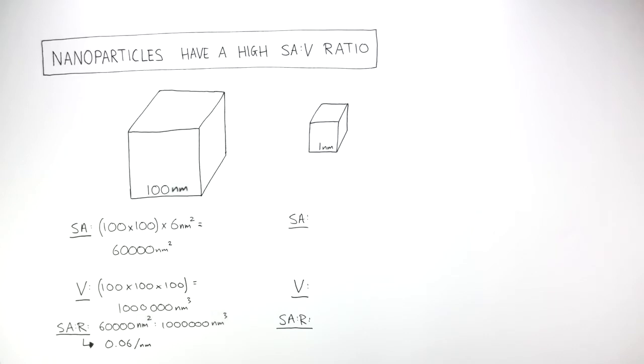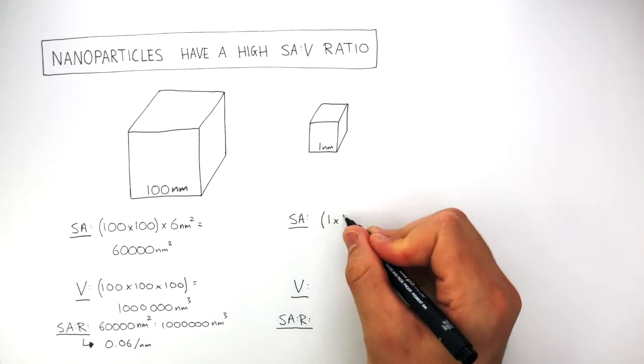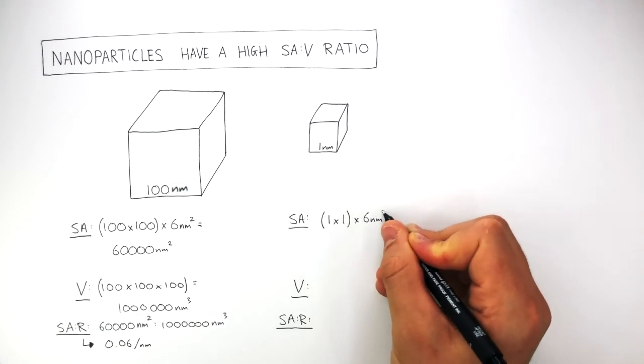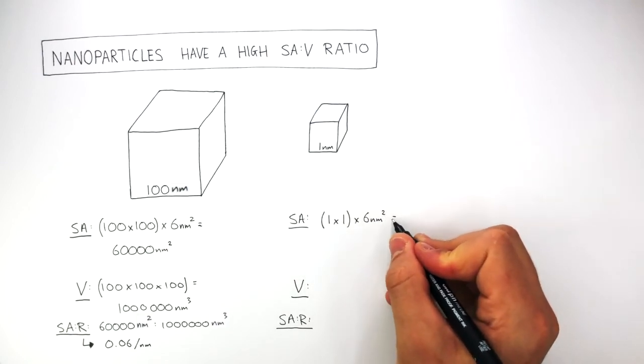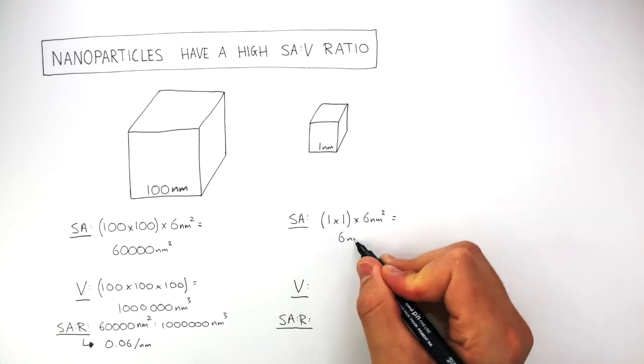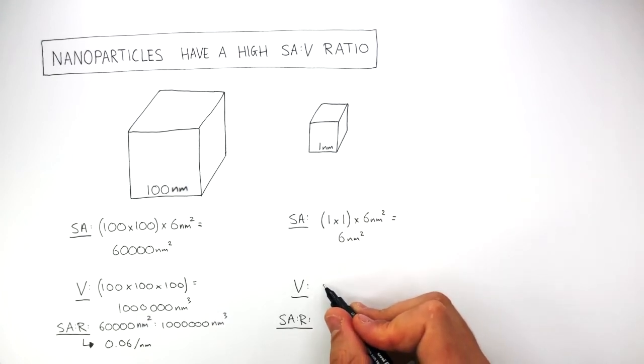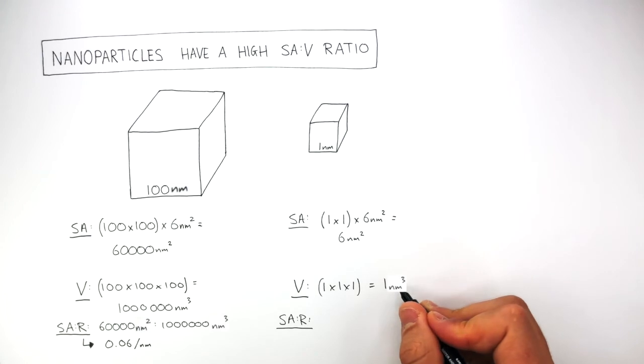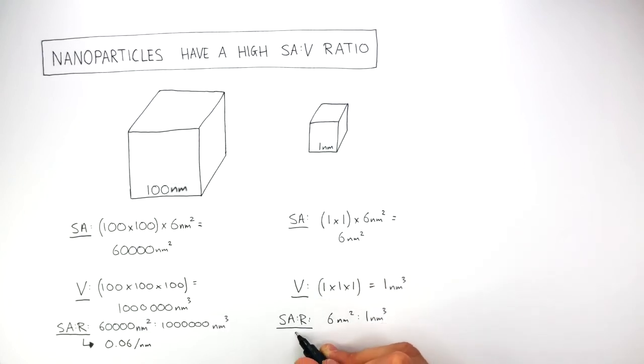The surface area of the smaller cube can be calculated by doing 1 times 1 times 6 nanometers squared. This has a total surface area of 6 nanometers squared. The volume is 1 times 1 times 1. This equals 1 nanometer cubed. And then the surface area to volume ratio is 6 nanometers squared to 1 nanometer cubed. So this gives an overall surface area to volume ratio of 6 per nanometer.